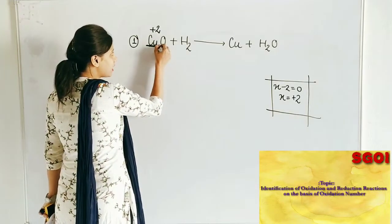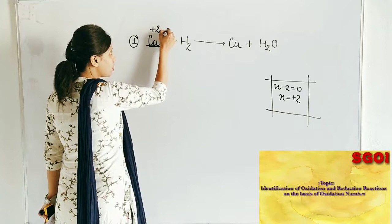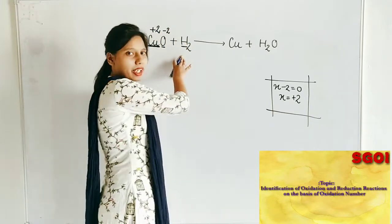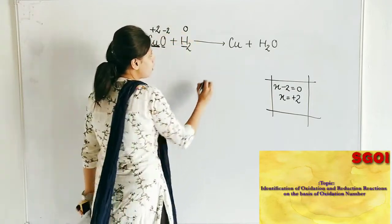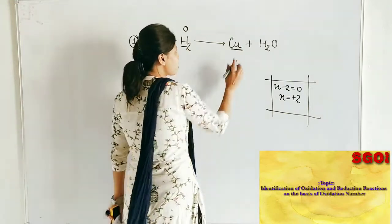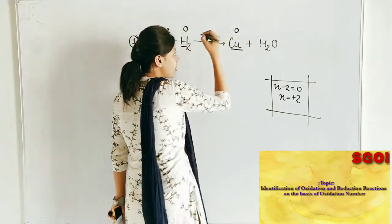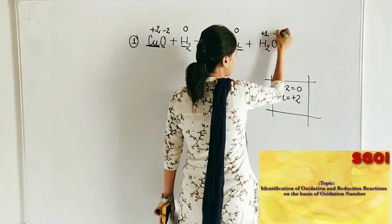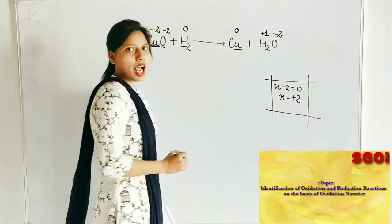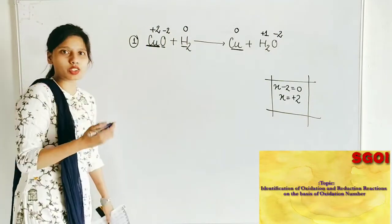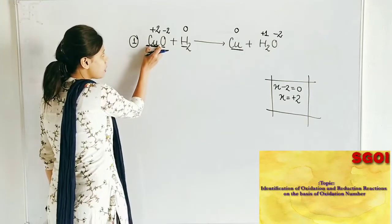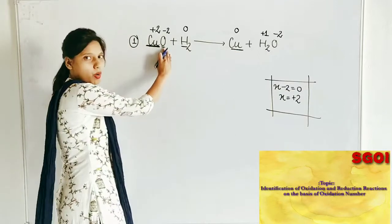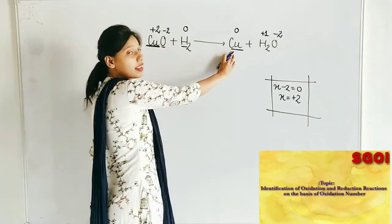So the oxidation number of O is minus 2. H2 is present in its natural elemental form in the atmosphere, so its oxidation number is 0. Cu here is in free state, so its oxidation number is 0. And for H2O: X oxidation number of H is plus 1 and O is minus 2.